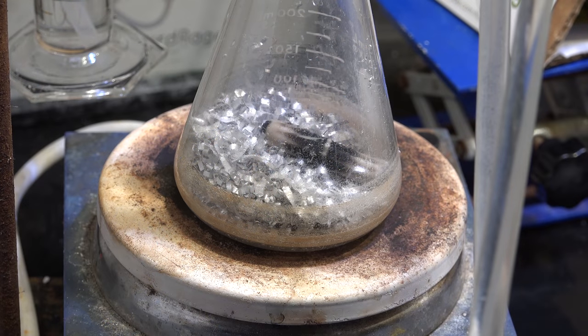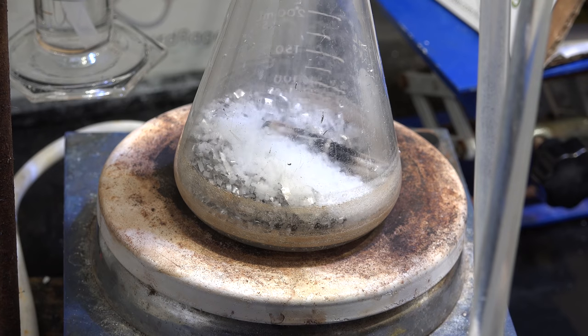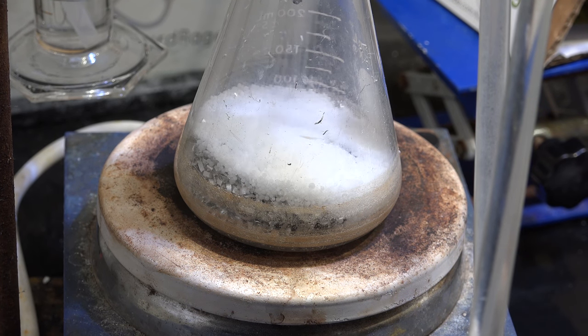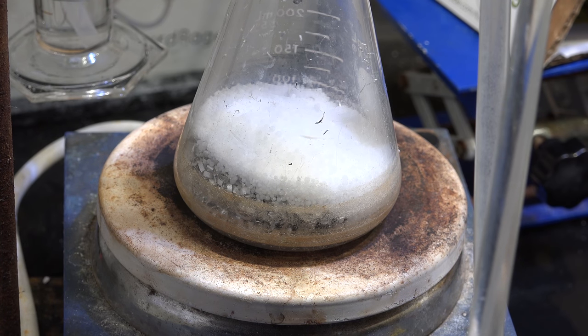Why is this happening? Eventually I realized the sodium hydroxide I was using already had water in it absorbed from the air. It's not much, maybe about 5-10% but that's enough to lower the melting temperature.